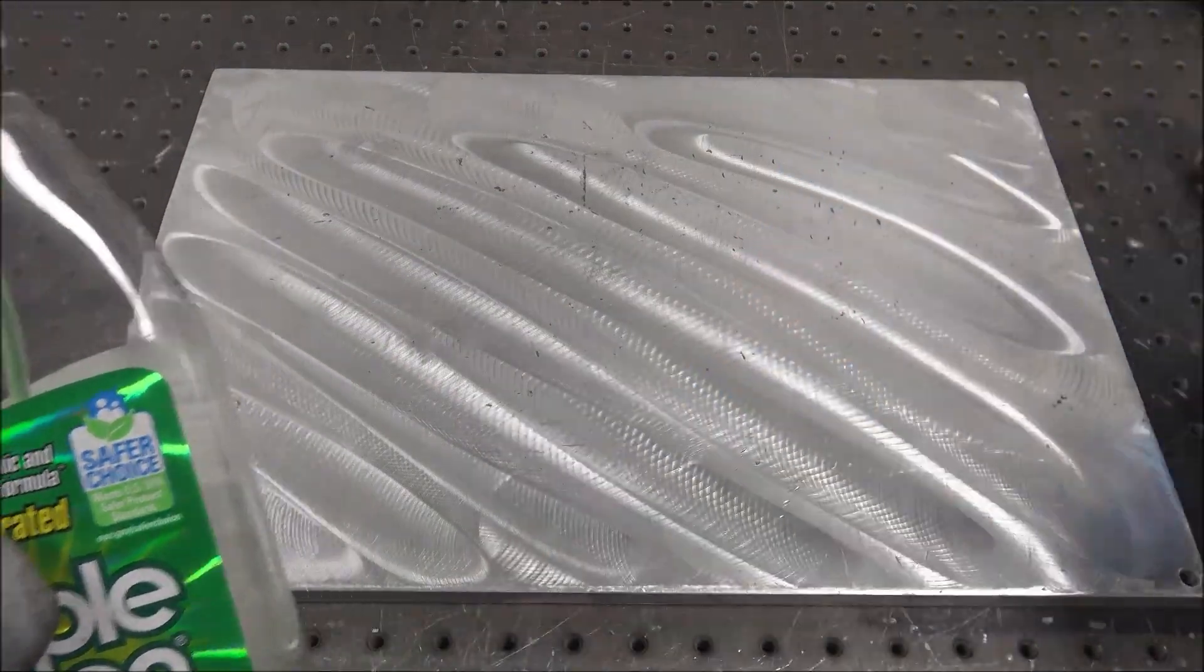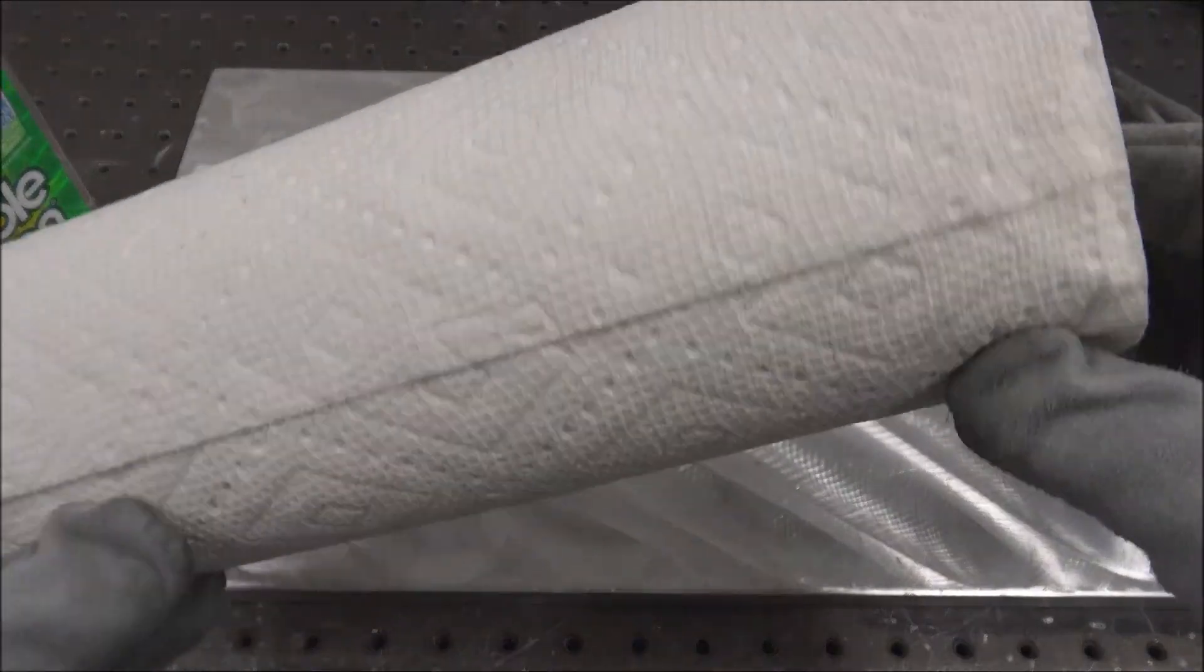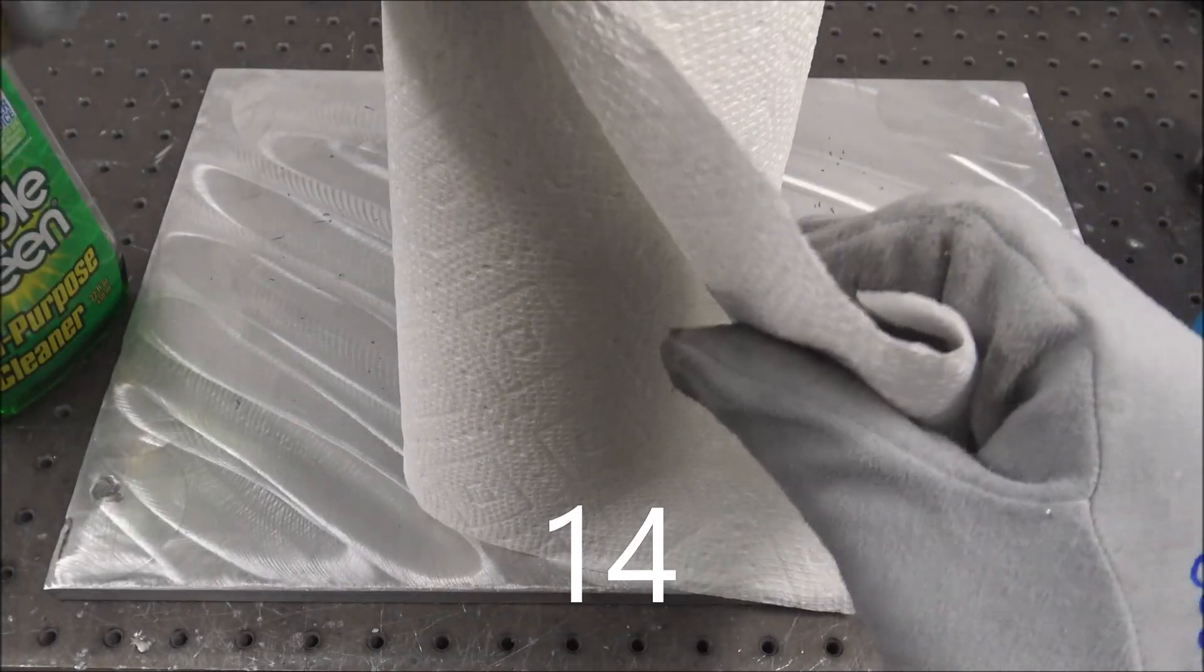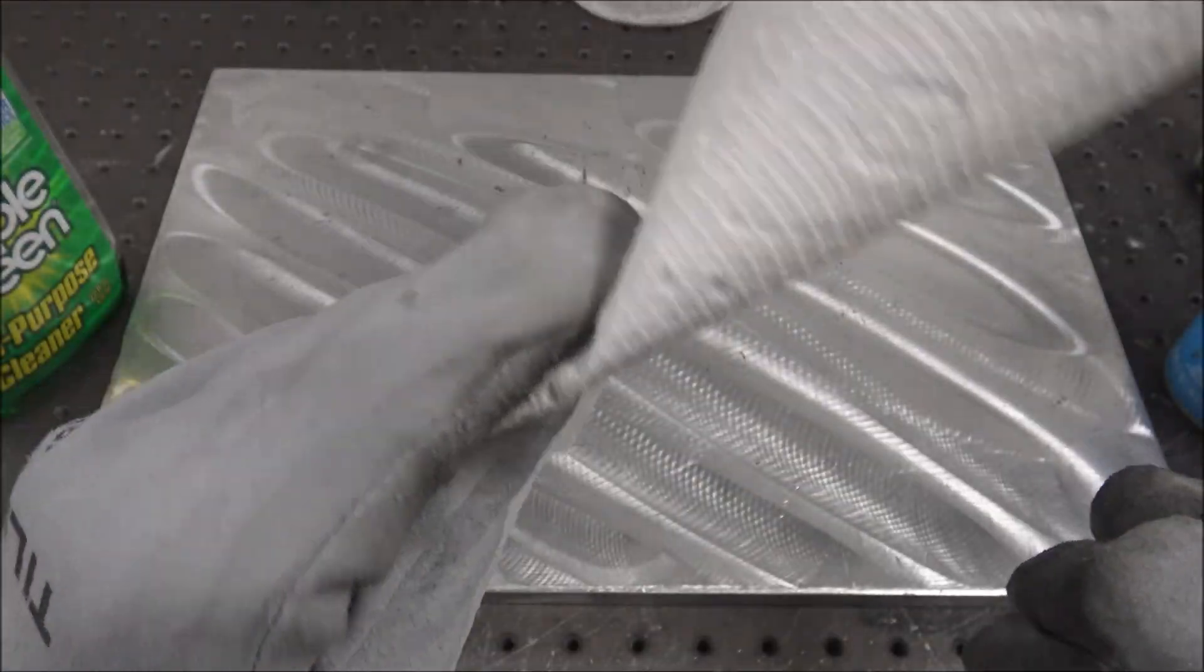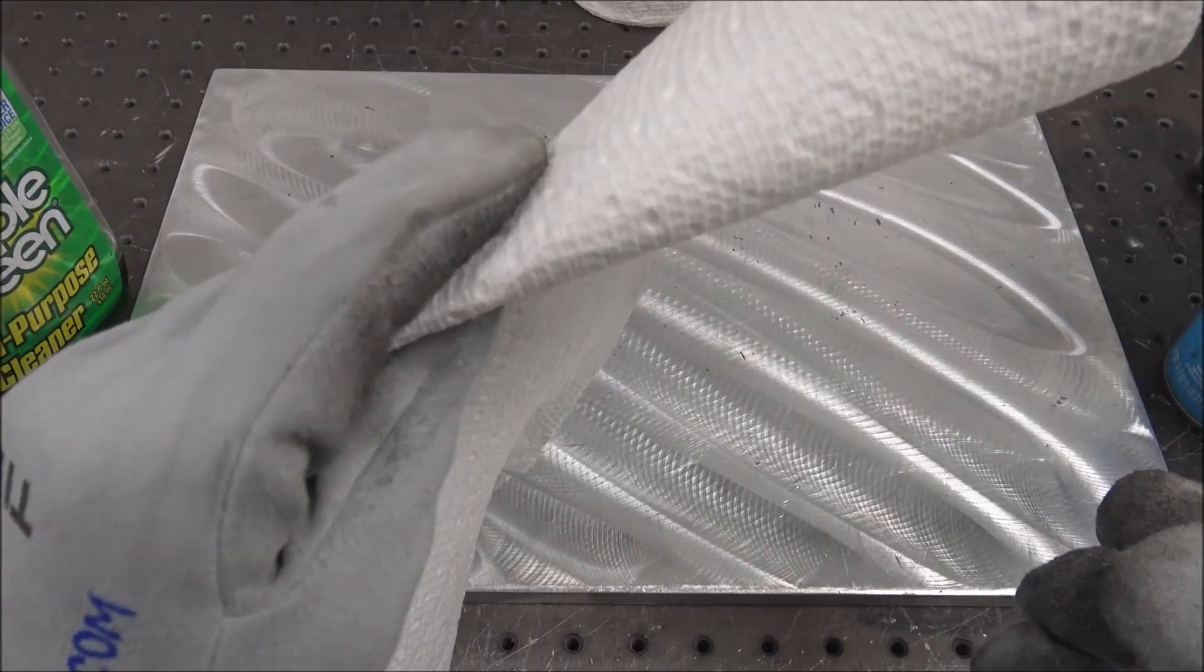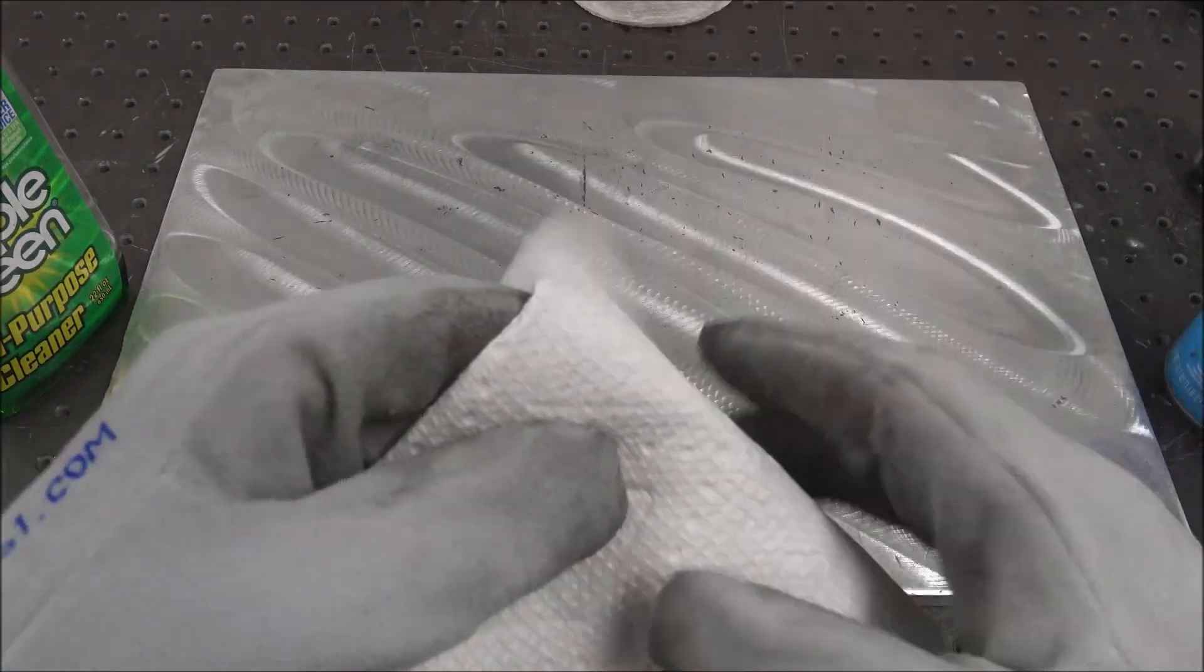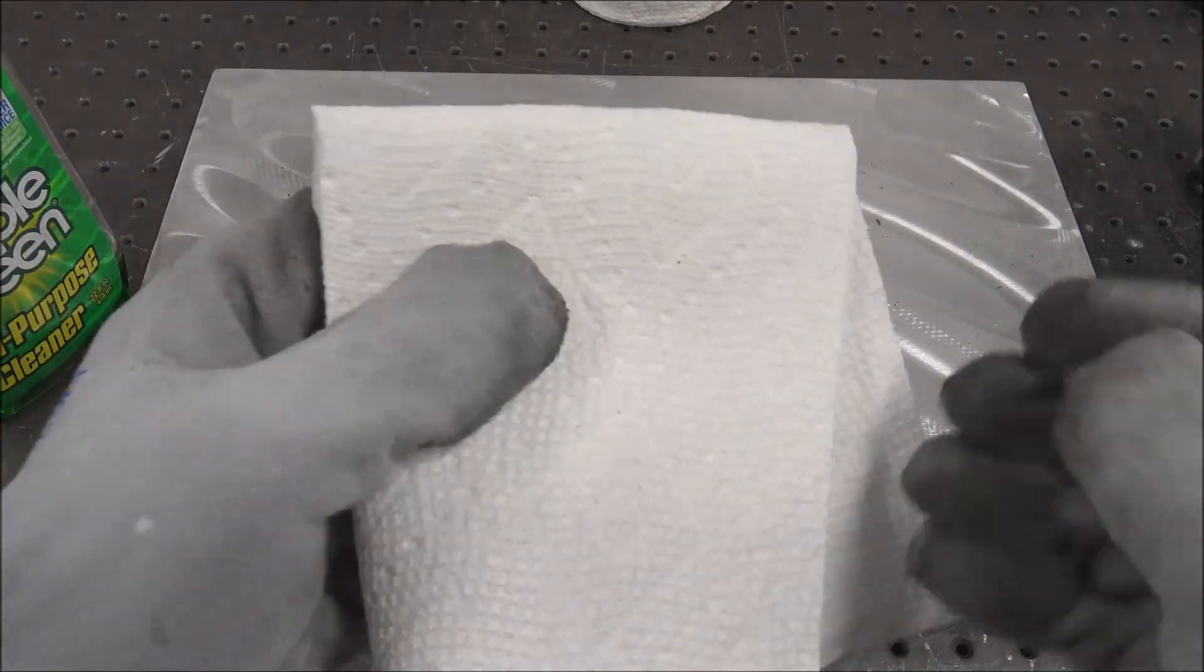And then for a final wipe down I use Windex. This is kind of nitpicky, but I prefer Bounty paper towels because I've tried several different brands, and these ones have just the right amount of abrasion for me without scratching too much. You can leave a really fine brush with this and they don't leave lint on the parts like other brands.